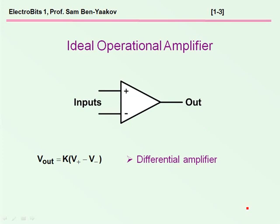What is an ideal operational amplifier? By ideal operational amplifier, we mean a device which has three terminals, two inputs and an output. This is a gain block in which the output is a function of the difference between the input terminal voltages.